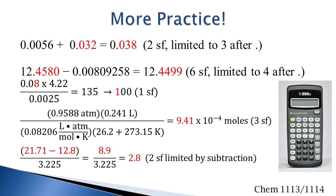Oftentimes, there is both an addition/subtraction and a multiplication/division component. You'll want to do what's in parentheses first. When this subtraction is done, we are limited to one digit after the decimal, giving two significant figures in the numerator. With four significant figures in the denominator, and two in the numerator, we're limited to two significant figures in our final answer.